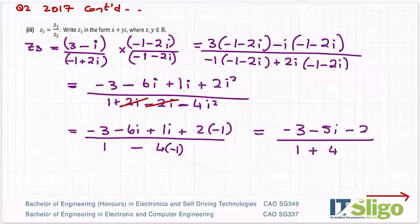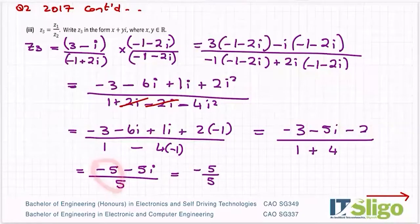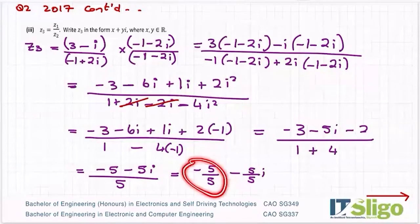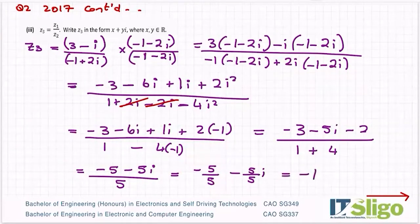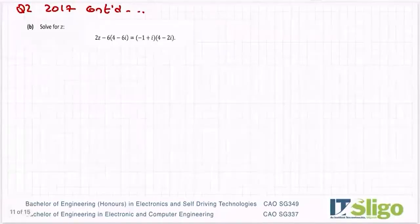Let's tidy up. So reals to reals: minus two minus two is minus five, minus five i, over one and four is five. So what you do is you split it and put the real part over the five and then you put the imaginary part over the five. So five over five is minus one, minus five over five is minus one i or minus i, whichever you prefer. So that's in the form x plus yi.